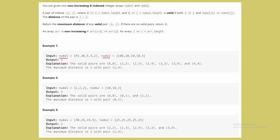If such a condition holds, we say indices i and j are valid, and their distance is defined as j minus i. For example, here 55 and 100 give us i=0 and j=0, and since 55 is less than 100, (0,0) is a valid pair with distance zero. We need to find the maximum distance among all valid pairs, or return zero if none exist.